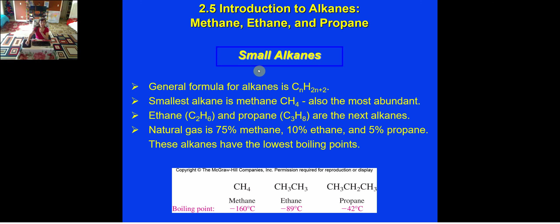Generally speaking, the alkane has a formula which is CnH2n+2. The number n represents positive integers. So if n is 1, 2, 3, 4, the related compounds will be methane CH4, ethane C2H6, propane C3H8, and butane C4H10. These smaller molecules are normally known as natural gas.